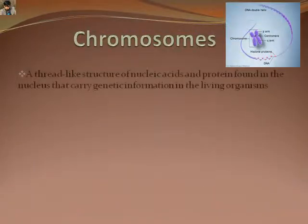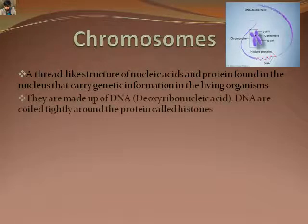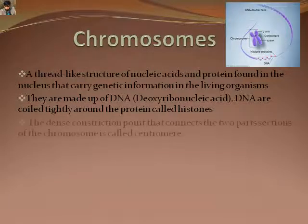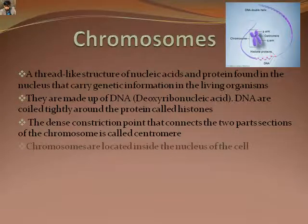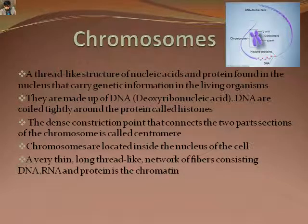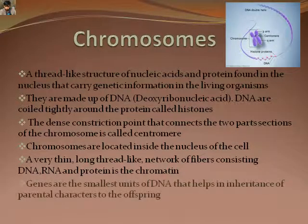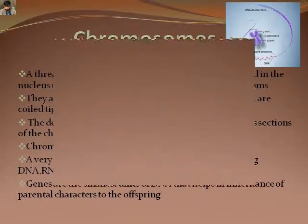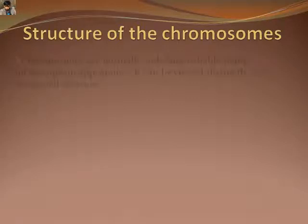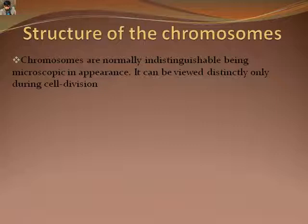Chromosomes are the thread-like structures formed of nucleic acids and protein that transfer the genetic information to the offspring. They are full of DNA that coil tightly around the proteinous histones. Centromere is the point of connection of two sections of a chromosome. The smallest units of DNA are the genes. Chromosomes are highly microscopic in nature, so they can only be observed during cell division.